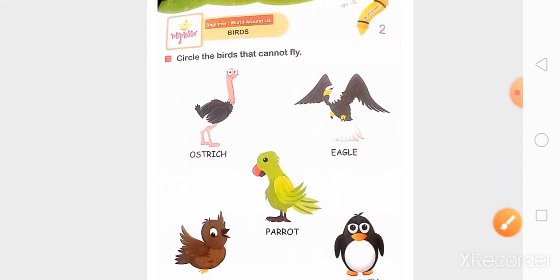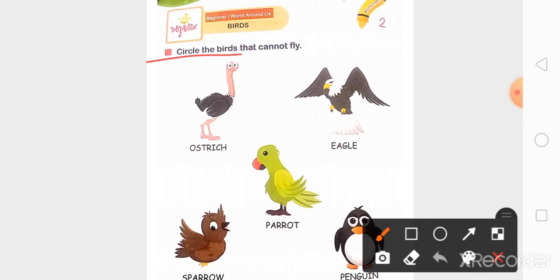फिर next part क्या है? Circle the birds that cannot fly.